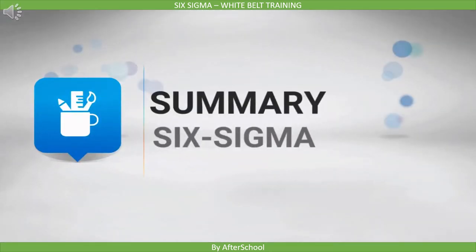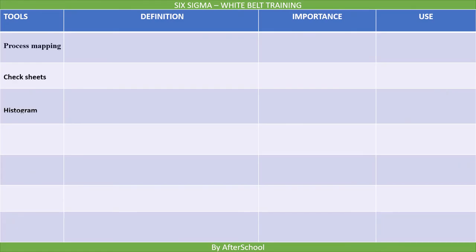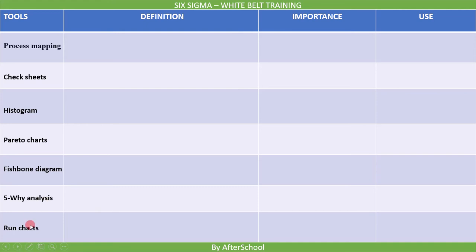Let's summarize all the points we learned about the 7 Quality Tools. These are the 7 quality tools which we covered in this lecture: Process Mapping, Check Sheets, Histogram, Pareto Charts, Fishbone Diagram, 5Y Analysis, and Run Charts. Now we will quickly summarize what they are, what their importance is, and when they are used with the help of this table. This table is also attached as a resource — you can download it for your reference.